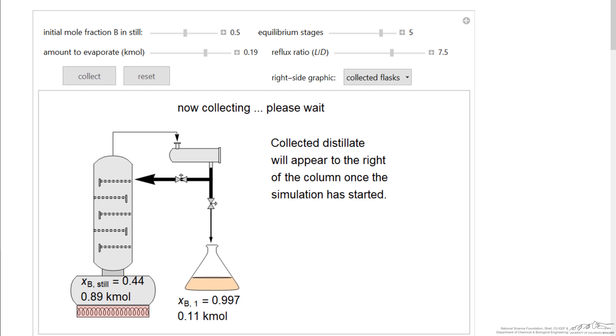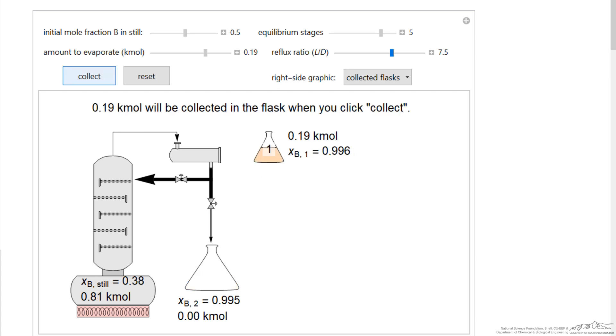So the first 0.19 kilomoles that we collect is 99.6% of component B. And we've depleted a significant amount of B in the still.